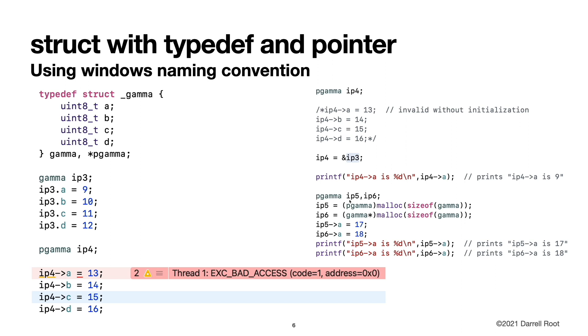Here we create two pointers to gamma, ip5 and ip6. And then we use dynamic memory allocation. These two examples are equivalent. In each case, we're allocating enough memory for a gamma struct. And in one, we're casting it to a pointer to gamma. And in the other one, we're casting it to a pointer to gamma. So ip5 and ip6 are equivalent. And then we can actually use the values.